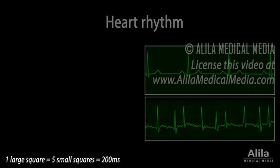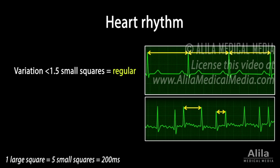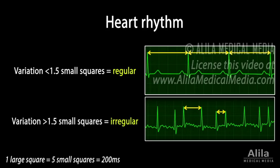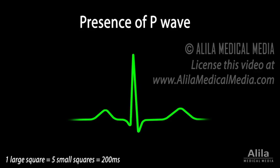For rhythm, measure the intervals between the R waves. If these intervals vary by less than 1.5 small squares, the rhythm is regular. If the variation is greater than 1.5 small squares, the rhythm is irregular.